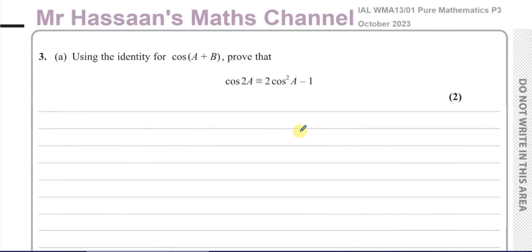This question is about trig identities. Part A says: using the identity for cosine A plus B, prove that cosine 2A equals 2 cosine squared A minus 1. Most of us should have this identity memorized by now. In Excel this identity is not given to us, but we need to use it a lot in P3, especially when doing things like integration and differentiation. Here they're actually asking us to prove it, which is something I normally show students how to do in case they've forgotten.